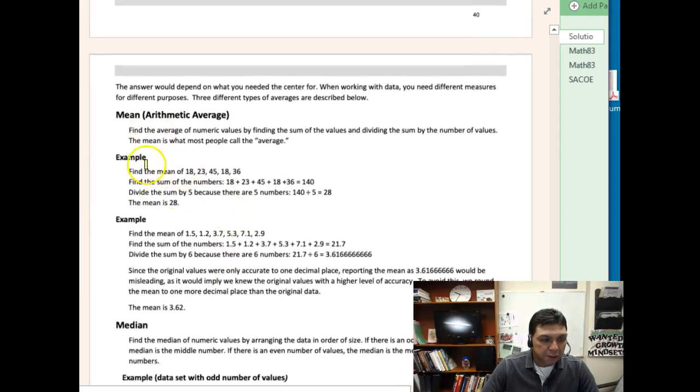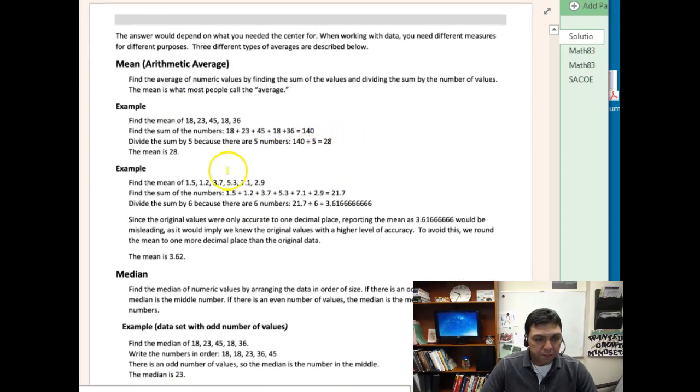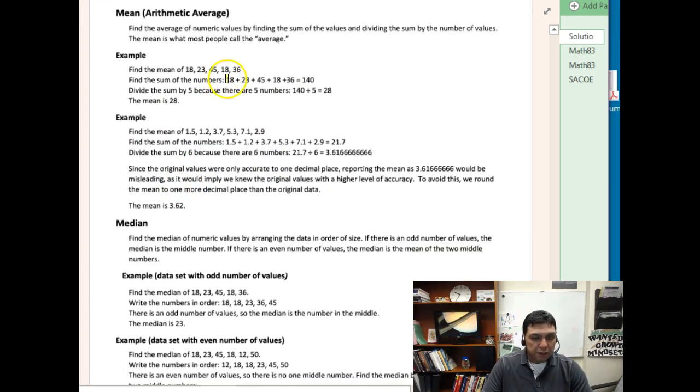Here are some examples. The mean or the arithmetic average is what we traditionally have known already. You add up all the values and then divide by how many values you have. That's a pretty straightforward calculation. You can see the example, and then you would round if it's not perfectly even. The idea is you're just putting it all together and sharing out amongst the number of objects that are there.